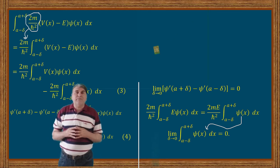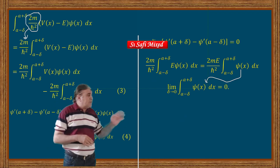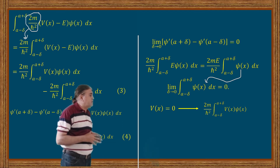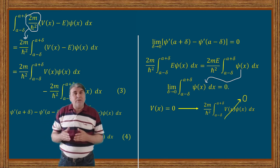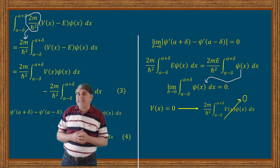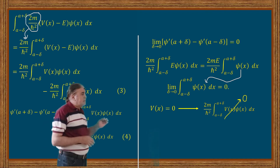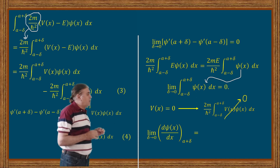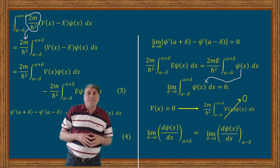Let us go sequentially through different choices of the potential. First, let V(x) = 0, which corresponds to a free particle. Under this condition, the first term in equation 4 also vanishes, meaning both sides of equation 4 agree with each other, leading to the continuity of ψ'(x). That is, the derivative of the wave function with respect to position is continuous for a free particle. We can write this result as: lim(δ→0) [ψ'(a + δ) − ψ'(a − δ)] = 0.